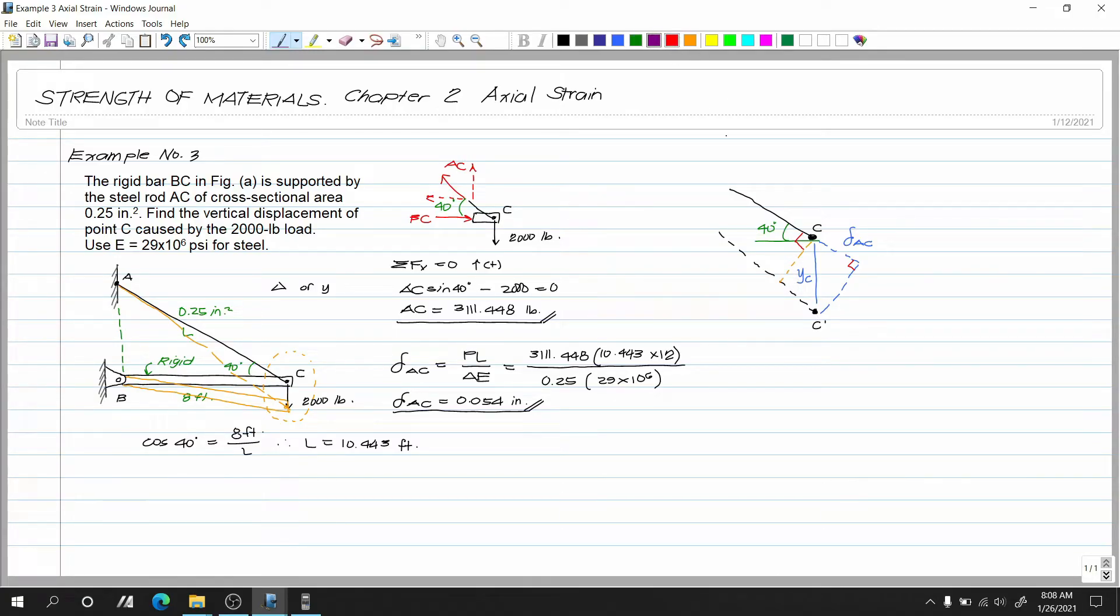Ngayon kung ito ay 40 degrees ito ay 90 degrees makuha natin to. Ibang kulay na lang. So ito raw is maliwanag. Ayan. Ito raw is 90 degrees minus 40 so this is 50 degrees. So ano rin ba to? Yung ating sa YC and sa horizontal axis ito rin is also 90 degrees. So makukuha natin ito. So 90 degrees minus 50 this is 40 degrees. So 40 degrees din ito.